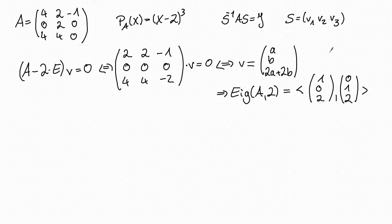We know that we can already choose two of the vectors to be those two eigenvectors. We have two linearly independent eigenvectors, which means we have two Jordan blocks. But since we have only three entries on the diagonal, one Jordan block has to be of size 2 and the other of size 1.